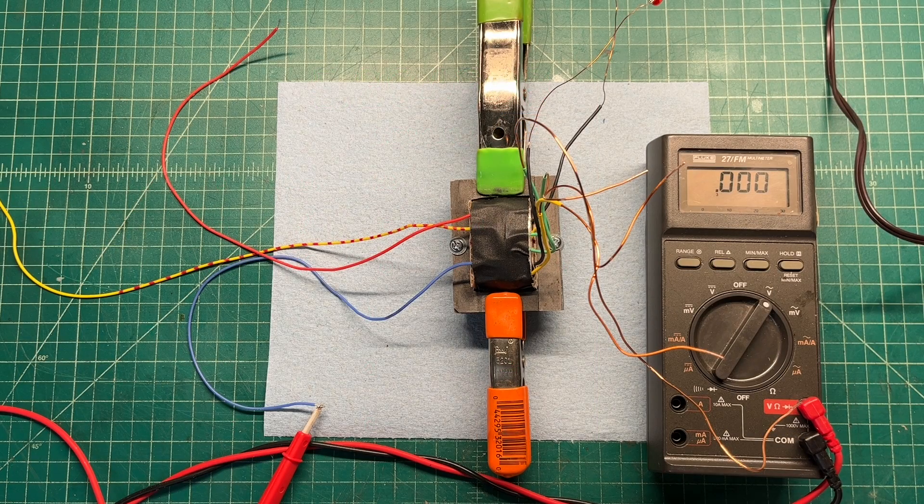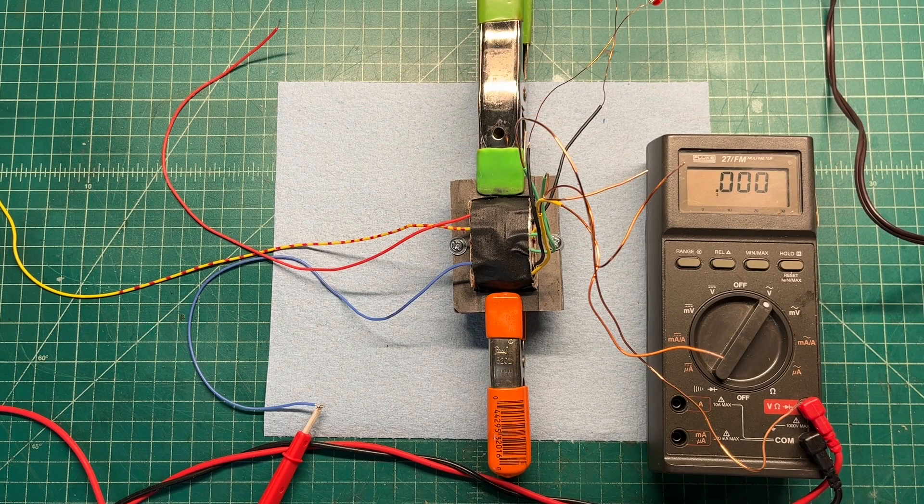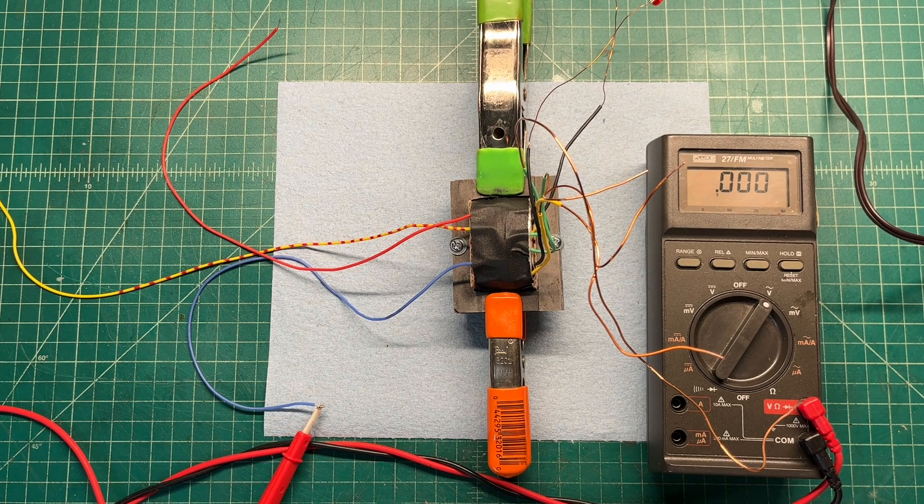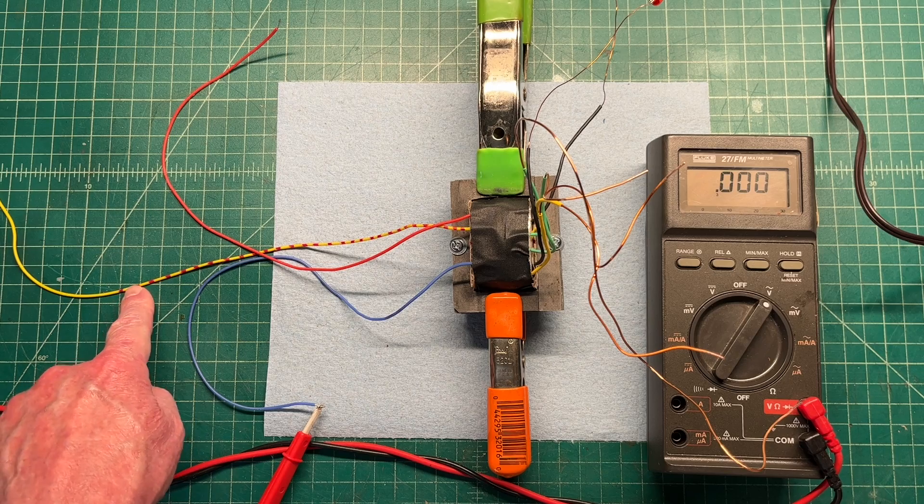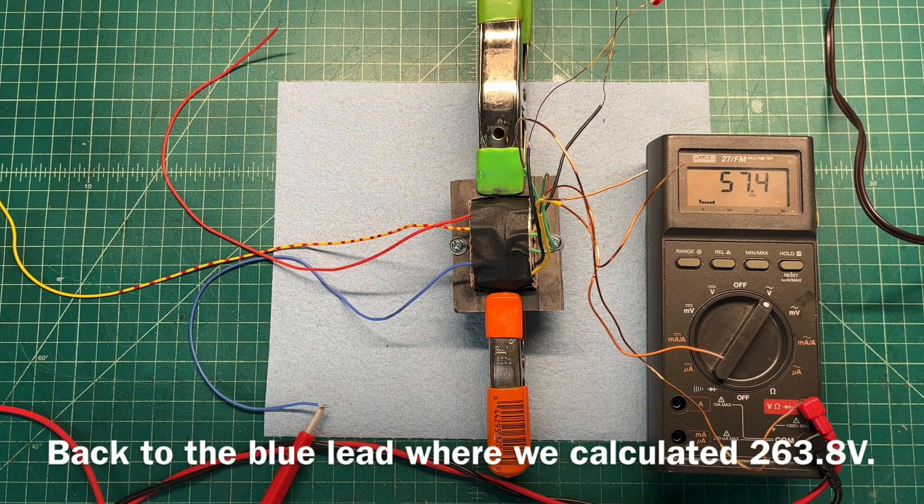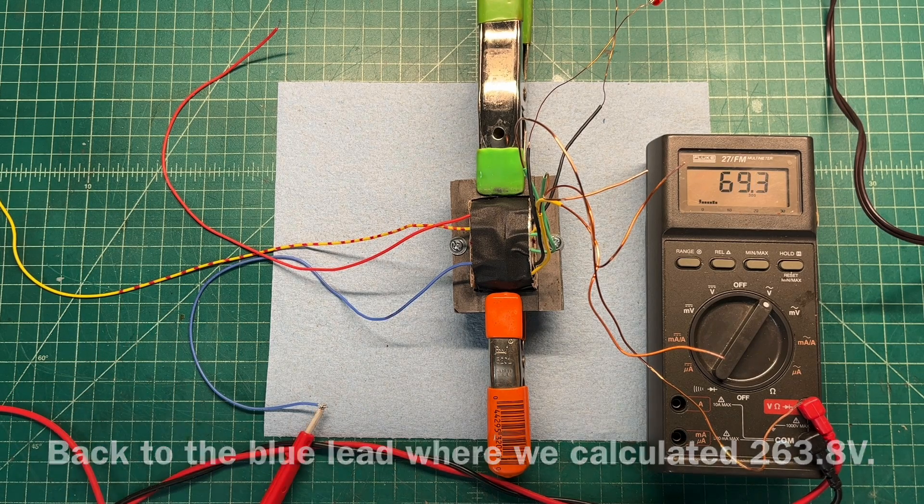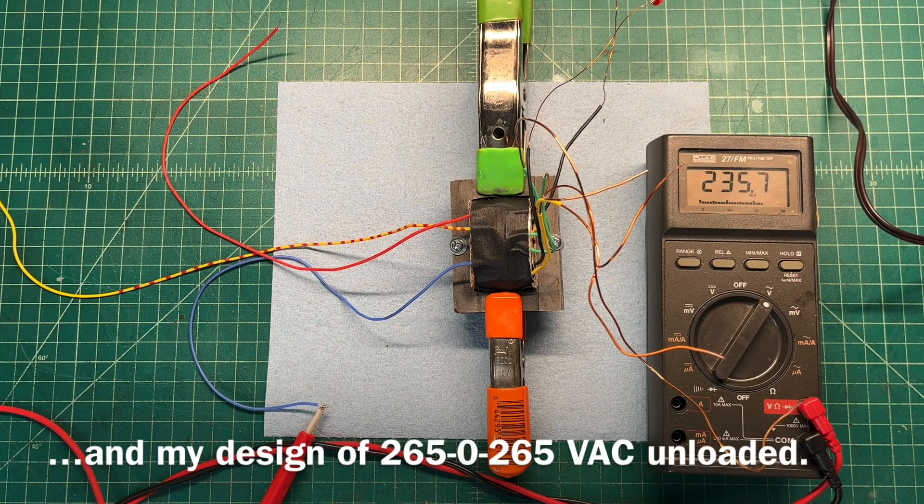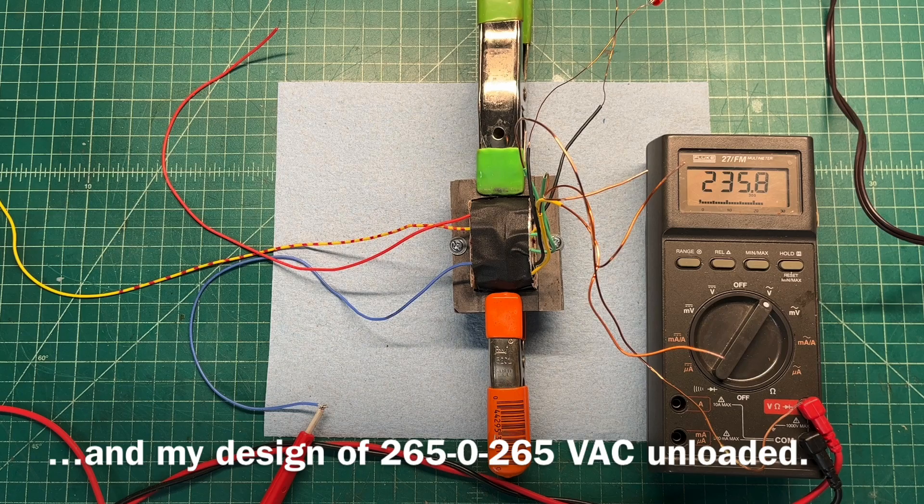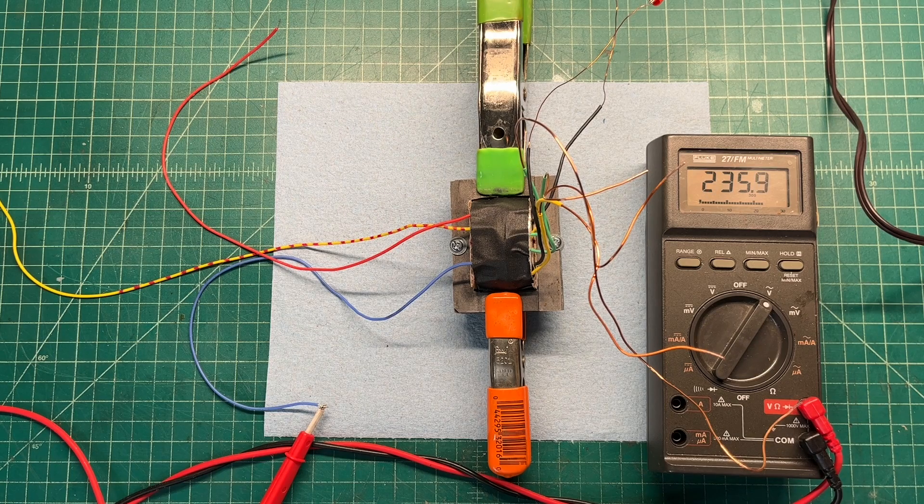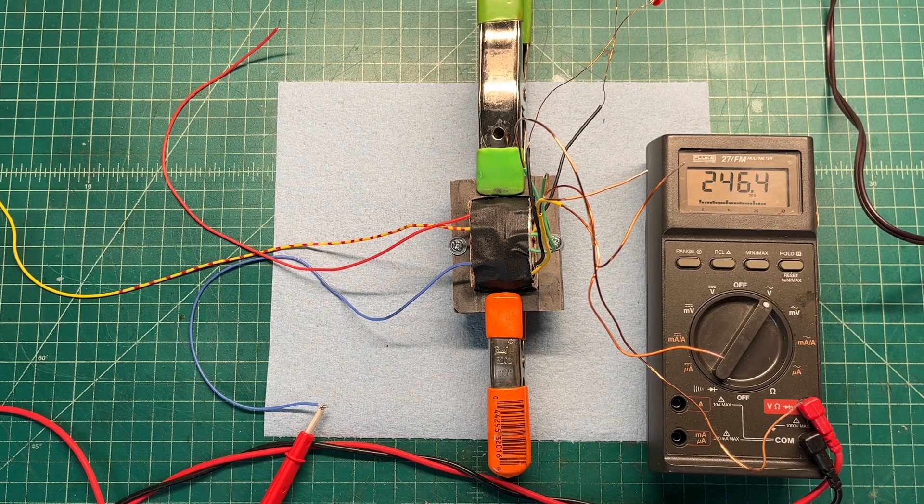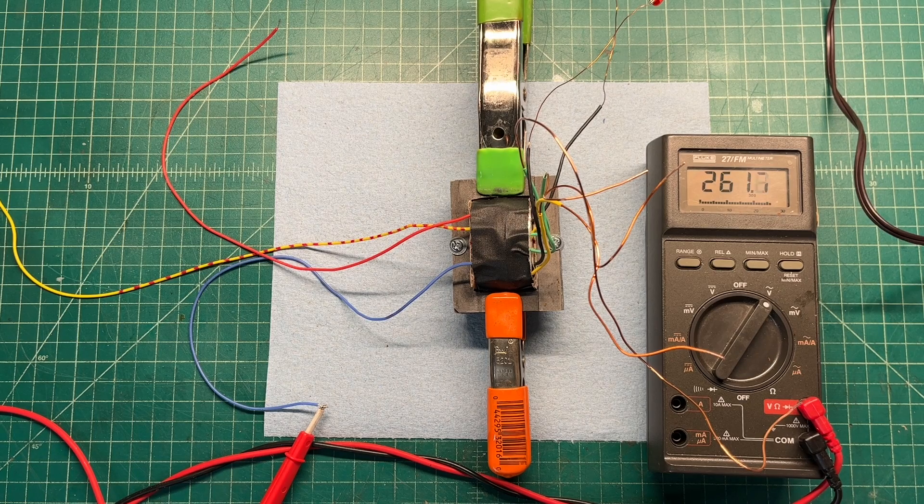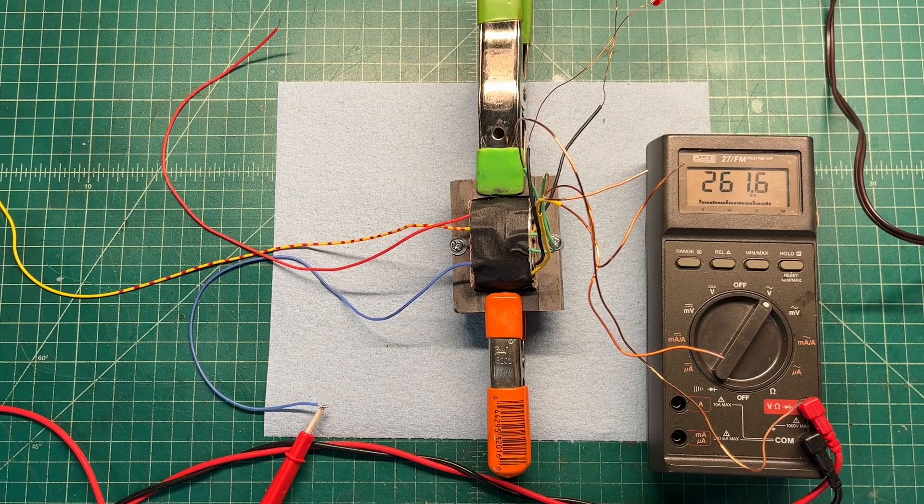And now I'll do the test again with the transformer unloaded and look at the voltages off of the high voltage from the center tap. You can see the voltage change as I ramp up the variac, keeping an eye on current.